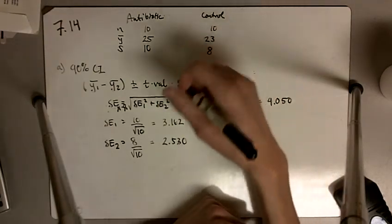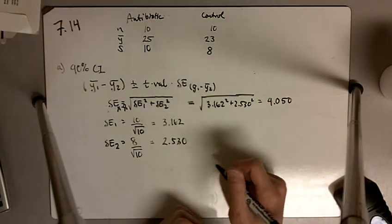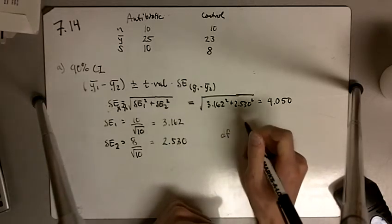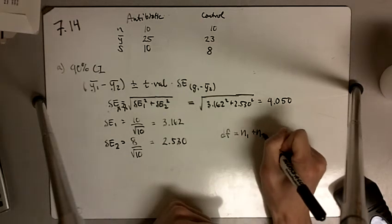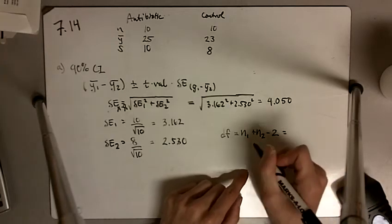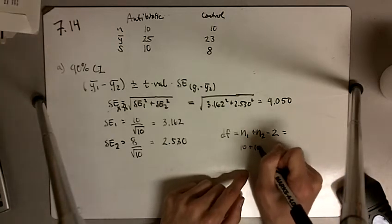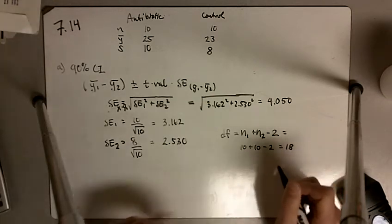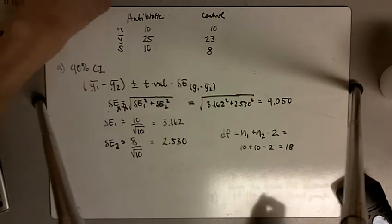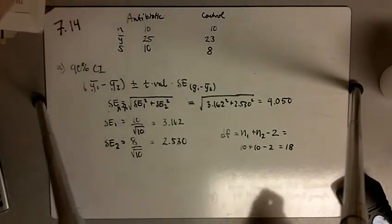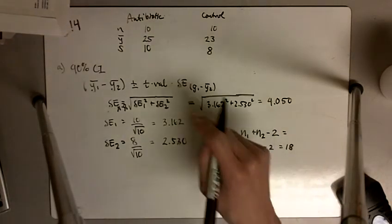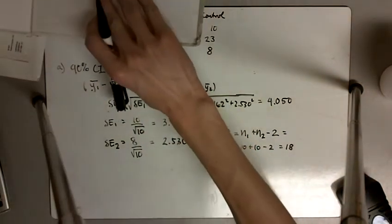For our t-value, we're creating a 90% confidence interval, and our degrees of freedom is going to be n₁ plus n₂ minus 2. This is an approximation. With 10 plus 10 minus 2 you get 18. If you let the computer calculate the degrees of freedom, you get 17.2, which is slightly different — but this approximation is a lot easier.